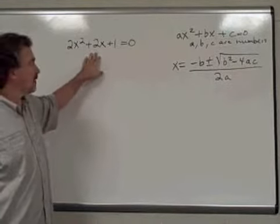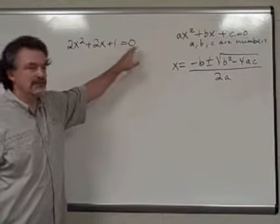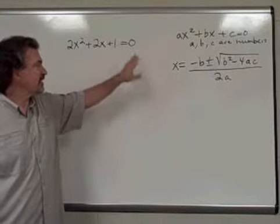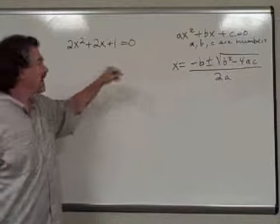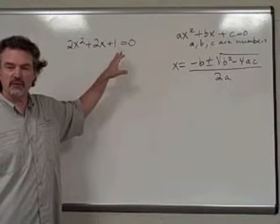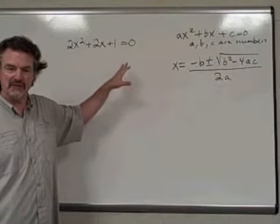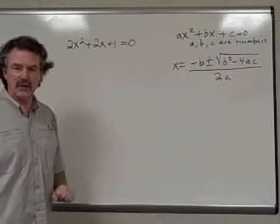Second power term, first power term, constant term equal to zero. You always have to have the equation equal to zero. You always have to have your polynomial written in descending powers of the variable before you apply the quadratic formula.